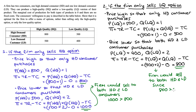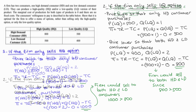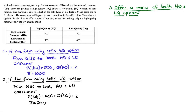Note that in both cases we ended up selling to both consumer types, but that's not always the case — you'll need to check. Now let's think about the third option: offering a menu of both high quality and low quality versions. The goal is to get the high demand consumer to choose the high quality option and the low demand consumer to choose the low quality option.